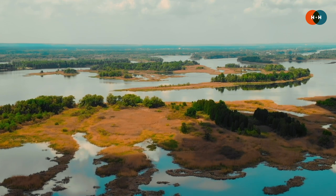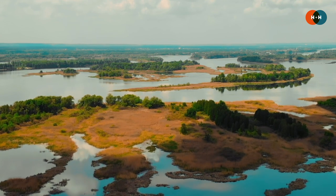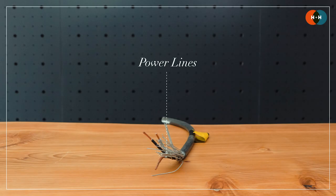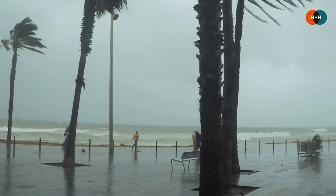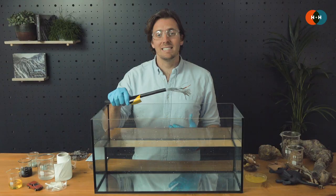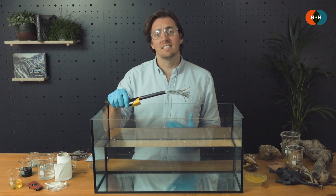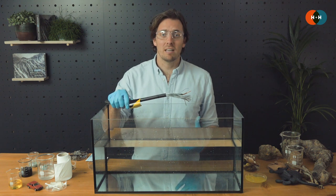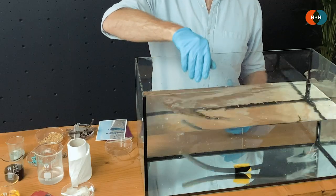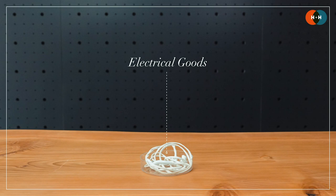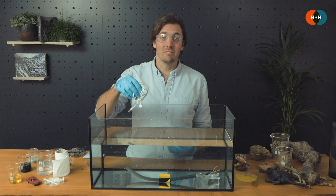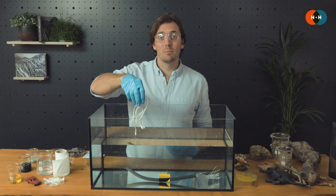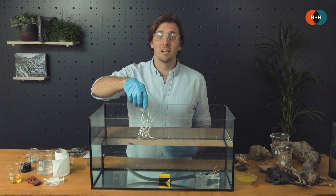As floodwaters rise and move across different terrains, they can also come into contact with things like power lines. These could well have been knocked down by the storms that brought the rain or waves, and when submerged they can pose a major risk to life and sadly lead to things like electric shock drowning. It's also very common to see a variety of electrical goods such as TVs, computers or even headphones being caught up in floodwater.